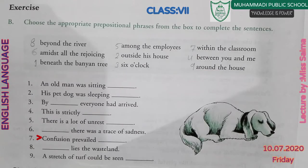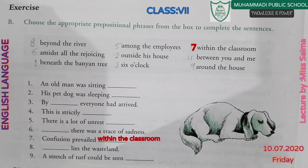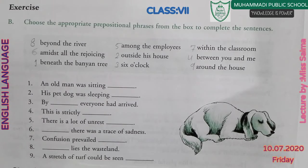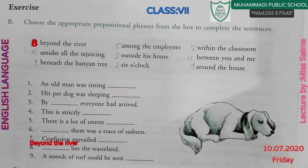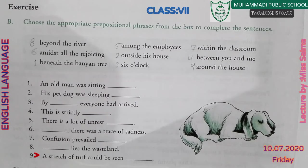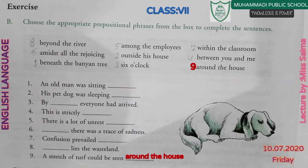Number seven: Confusion prevailed within the classroom. Number eight: Beyond the river lies the wasteland. Number nine: A stretch of turf could be seen around the house.